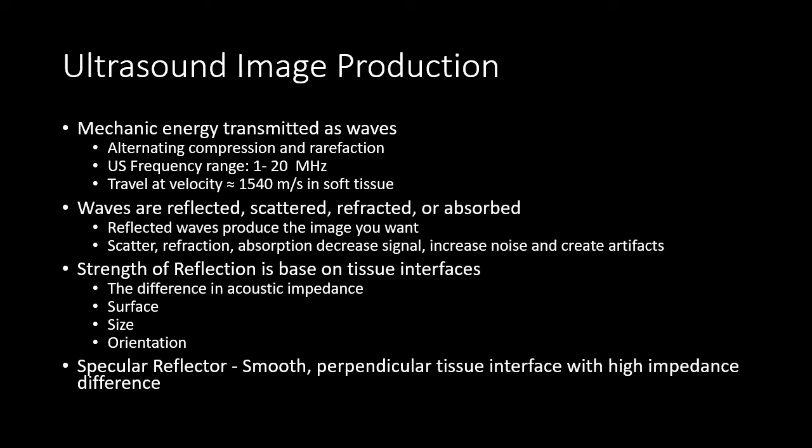As the waves pass through the tissue, many different things can happen to those waves. But the most important thing is the reflection of the wave off of the tissue interface back to the probe, and those reflected waves are what produce your image. Waves that are not reflected but are scattered, refracted, or absorbed reduce the signal within your image and create noise and artifacts.